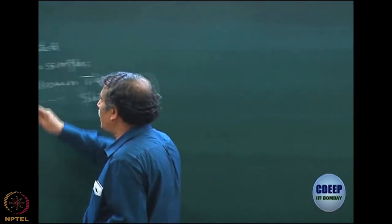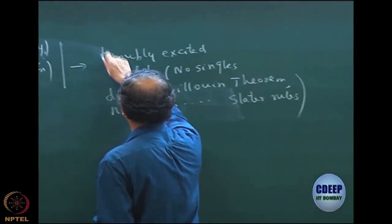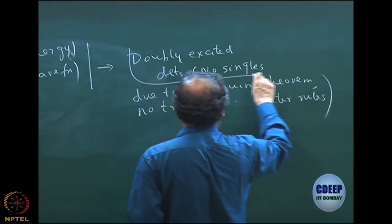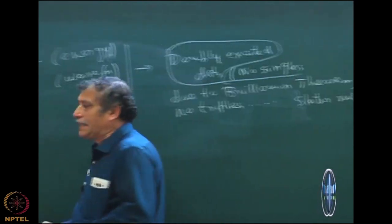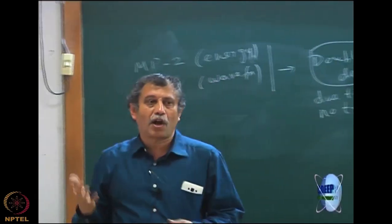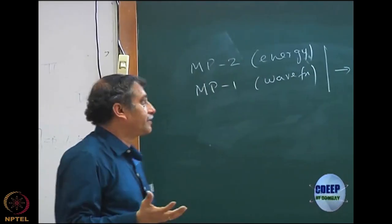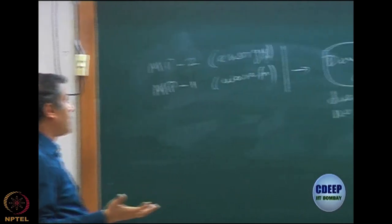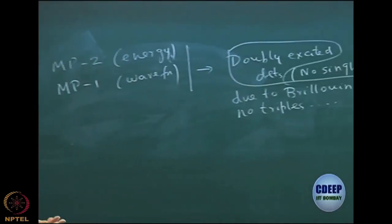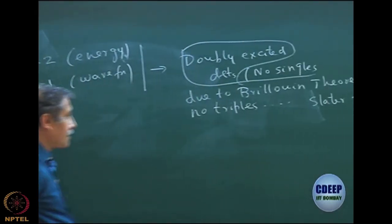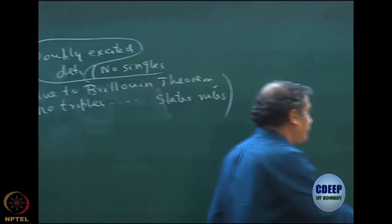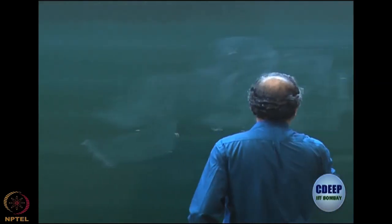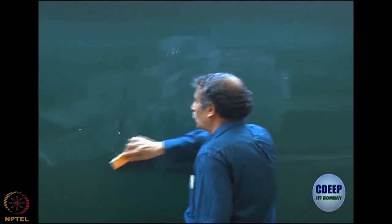We want to emphasize the importance of doubly excited determinants in the lowest order correction. What we mean by lowest order correction is that this is the most important correction, and this is where doubly excited determinants play an important role.